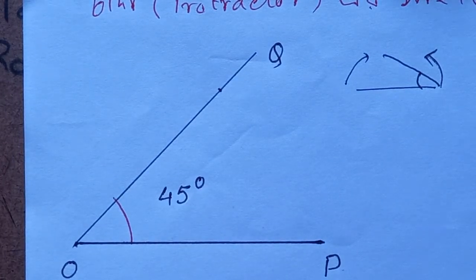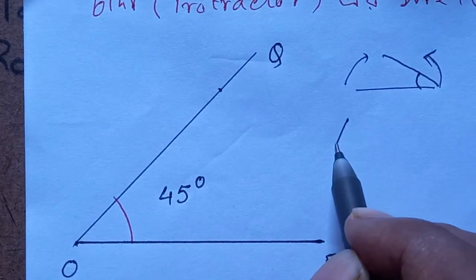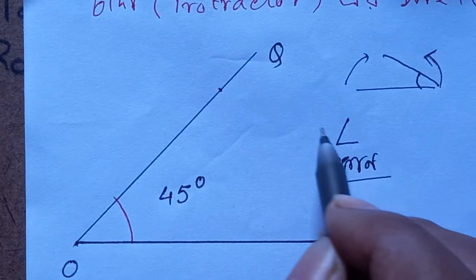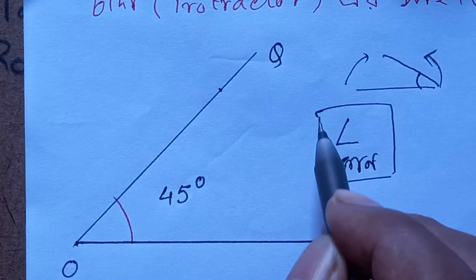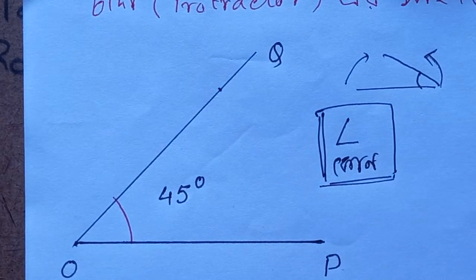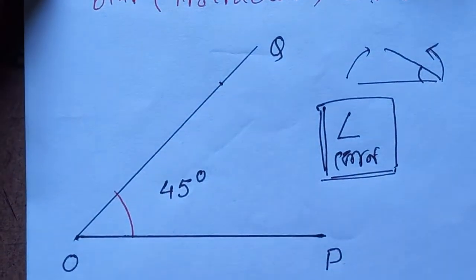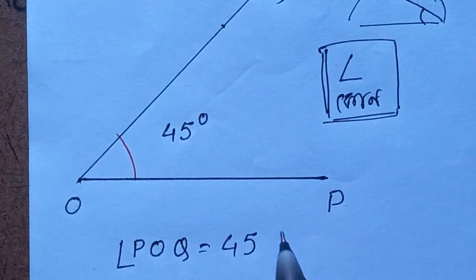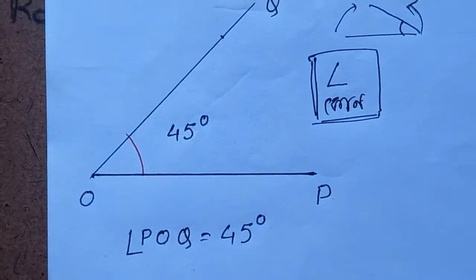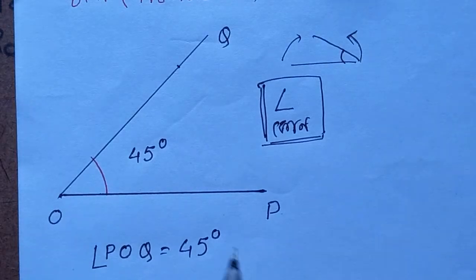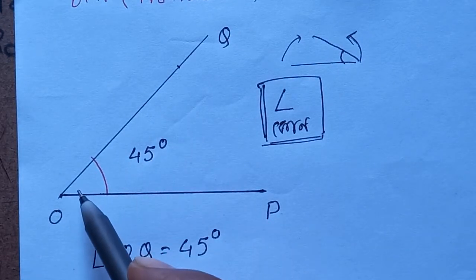Now I will write the angle of P. This is the angle A. Here is C, which is C. D is B, and it is C. Angle POQ is 45 degrees. This is a good thing — we should not skip this step. Okay.